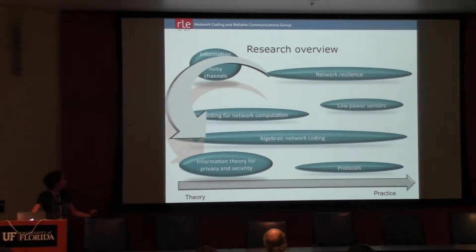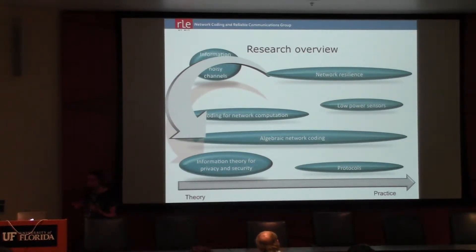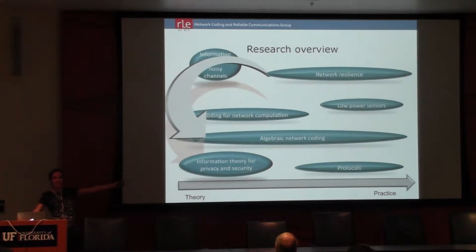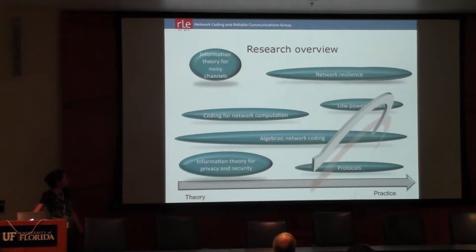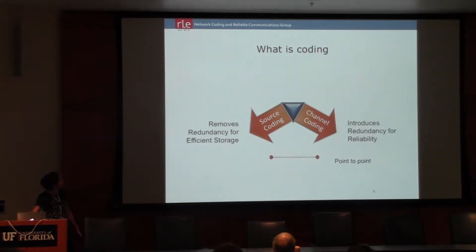What joined us thematically was that we were both information theorists, even though we had very different approaches. I had more of a Shannon theory approach, and Ralph had more of a coding theory approach — a really algebraic approach. And from there, how things started on the very theory side; you see this vague abscissa from theory to practice, going to much more practical things: code constructions, protocols, implemented protocols, and so on.